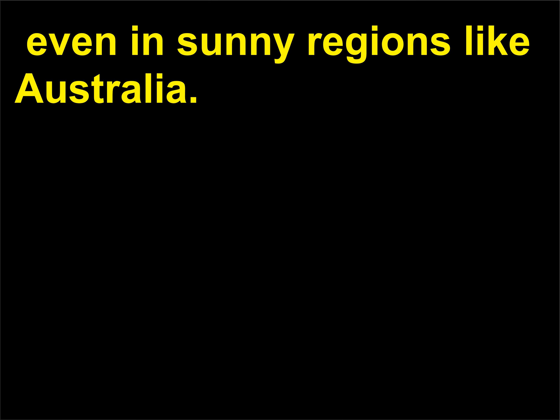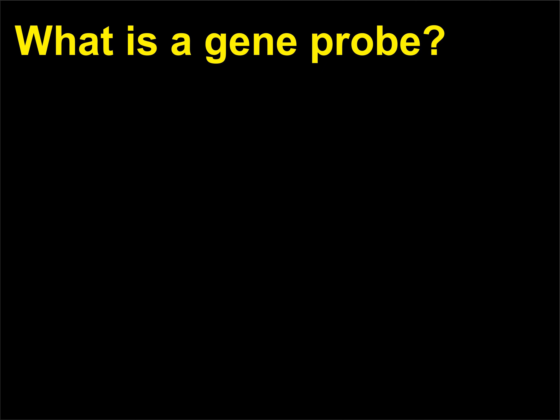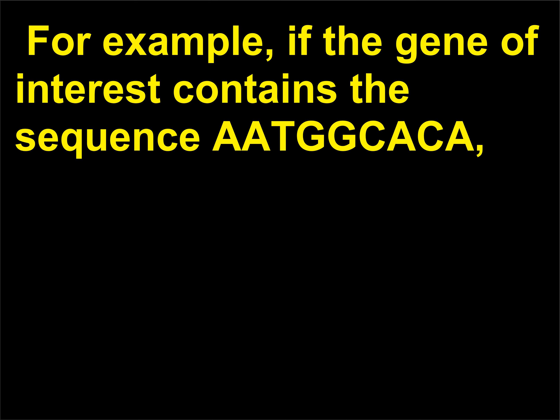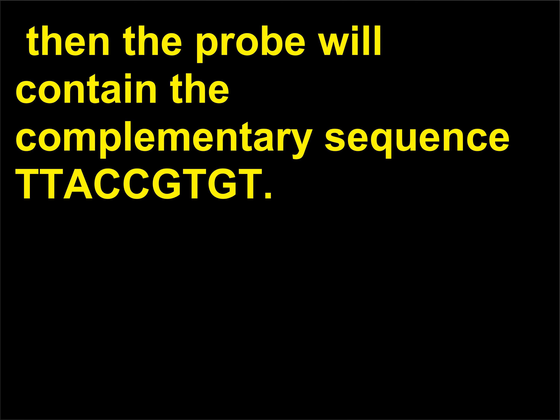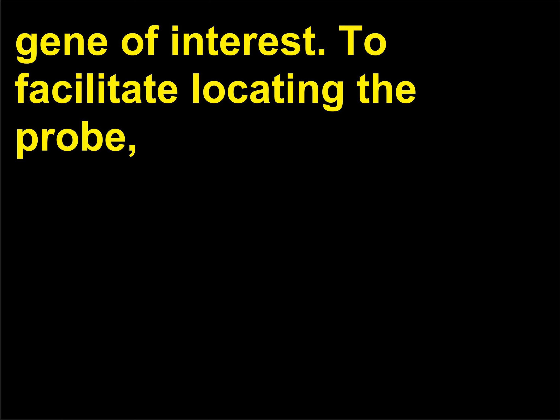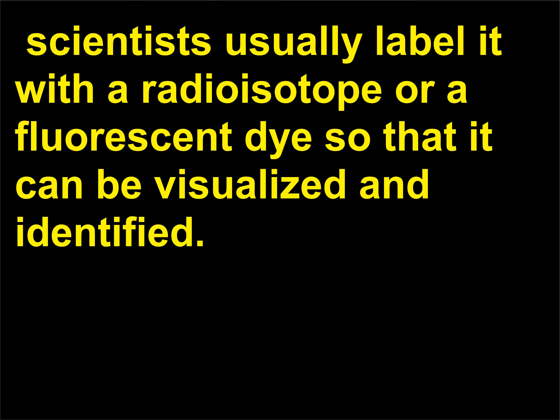Even in sunny regions like Australia. A gene probe is a specific segment of single-strand DNA that is complementary to a desired gene. For example, if the gene of interest contains the sequence ATCACA, then the probe will contain the complementary sequence TAGT. When added to the appropriate solution, the probe will match and then bind to the gene of interest. Scientists usually label it with a radioisotope or a fluorescent dye so that it can be visualized and identified.